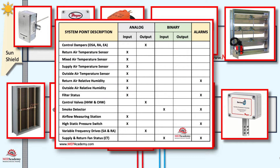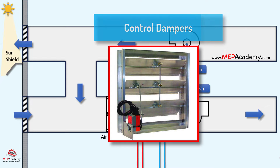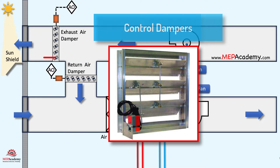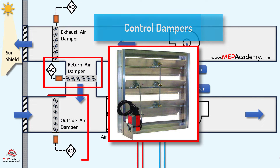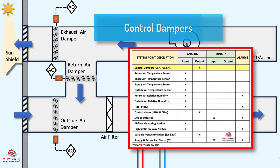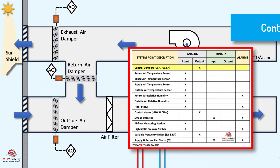We'll also build a controls points list as we add the various DDC components for controlling the air handler. Three dampers are added which include the exhaust air, return air, and outside air dampers. These dampers will have actuators that will allow the DDC system to adjust the damper positions to meet the system requirements. They will be actuated by 24 volts of power.